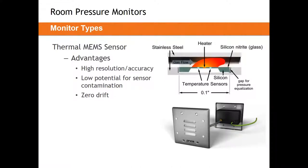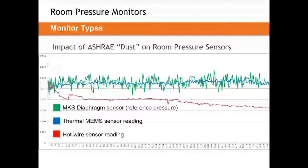Unlike the hot wire anemometer, which needs to be cleaned because airflow passes through the device, a thermal MEMS sensor has its temperature sensors and heating elements encased in a silicon wafer, pulling them out of the airstream so they don't physically collect lint, dust, or dirt. And just like the hot wire anemometer, there's no risk of drift because there's nothing to physically change, stretch, or move. What you get with a thermal MEMS sensor is a maintenance-free device.